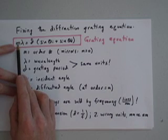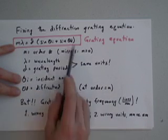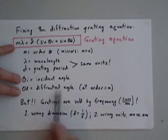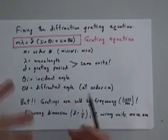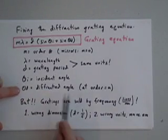Several different values of m solve this equation and give you different diffracted angles, different theta d, and those are the different spots that sometimes come out of gratings under certain conditions.